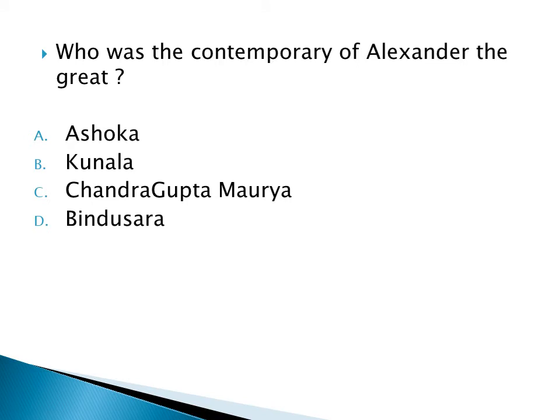Who was the contemporary of Alexander the Great? Option A: Ashoka, Option B: Kunala, Option C: Chandragupta Maurya, Option D: Bindusara. The right option is Option C: Chandragupta Maurya.